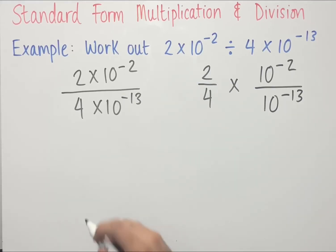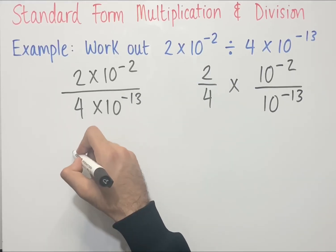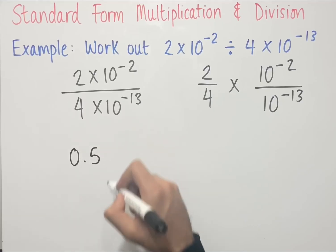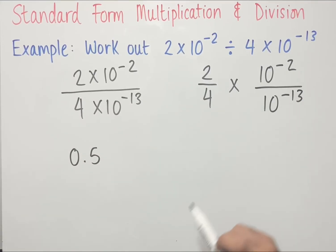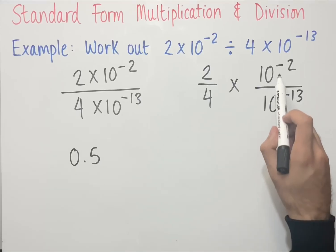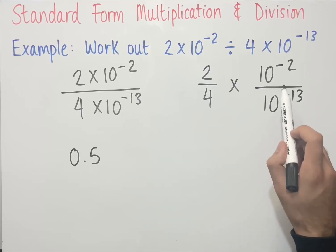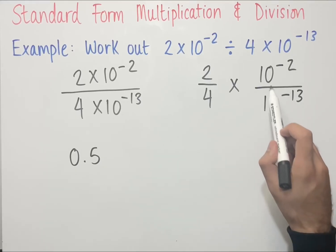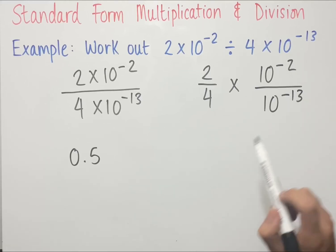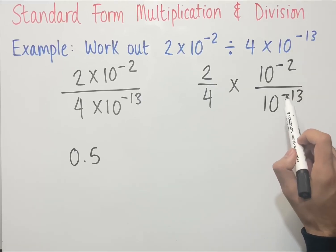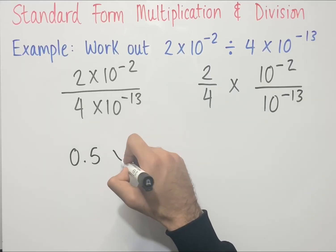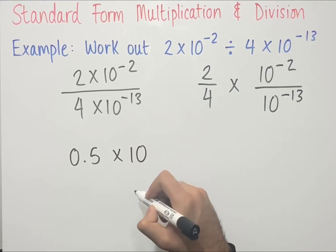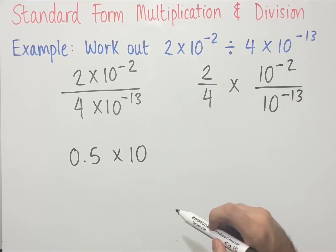We can now simplify: 2 divided by 4 is 0.5. And 10 to the power of minus 2 divided by 10 to the power of minus 13 — since we've got two indices with the same base and we're dividing, we take away the powers. So minus 2 minus minus 13 is the same as minus 2 plus 13, giving us 10 to the power of 11.